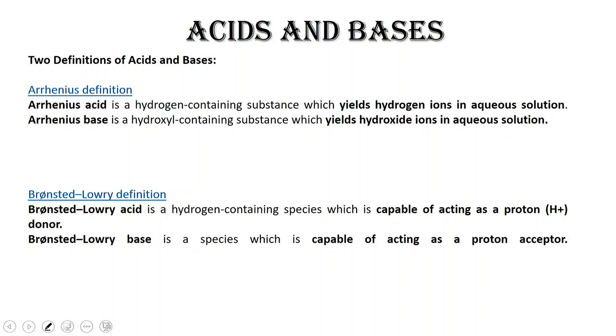An Arrhenius acid is a compound that contains hydrogen and it's going to yield hydrogen ions in solution. An Arrhenius base is one that contains a hydroxyl or an OH group and it's going to yield those hydroxide ions in aqueous solution. Now the thing about Arrhenius acids: it must be an aqueous solution. And what I mean by that is that water is the solvent.